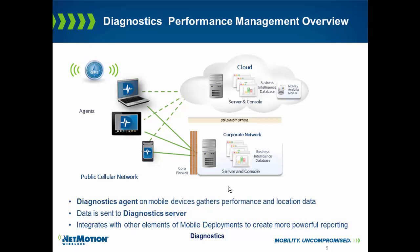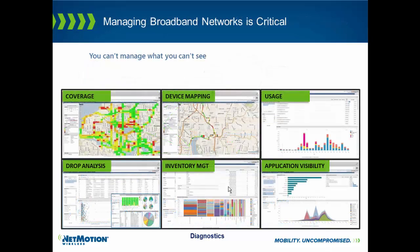Every 20 minutes this data is packaged up and sent to a console. This console can be on-premise or in the cloud. With this console we can develop many rich reports such as showing a true coverage map — true to your network because it reflects what your users are actually receiving — as well as looking at individual devices, overall usage, drop analysis, application visibility, and a full inventory management system, since every five seconds we're tracking all of this detail about what's happening on the device.